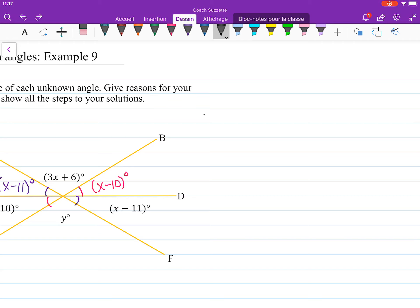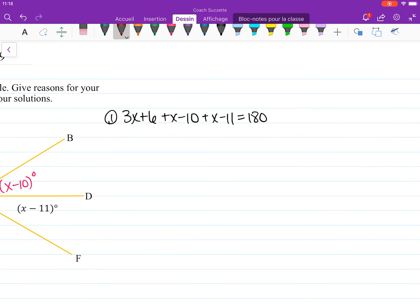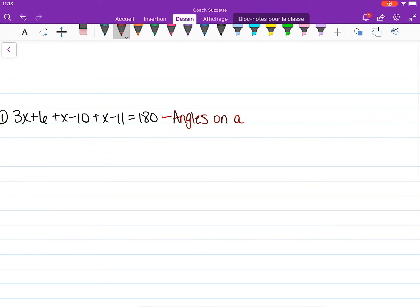OK. So 3x plus 6 plus x minus 10 plus x minus 11 is equal to 180. Why don't we write in our reason now: angles on a line sum to 180.